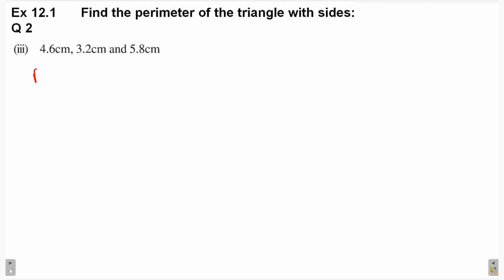Now here, perimeter is equal to adding all three sides: 4.6 plus 3.2 plus 5.8. This equals 4.6, 3.2, 5.8. Let's add: 8 plus 2 is 10, plus 6 is 16. One carry. 5 plus 4 is 9, plus 10, plus 3 is 13. So 13.6 centimeter is the perimeter.